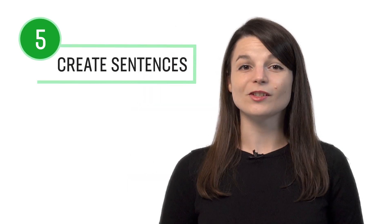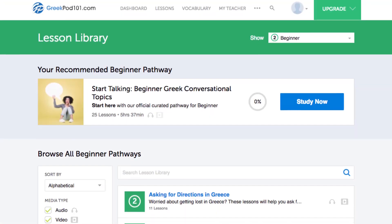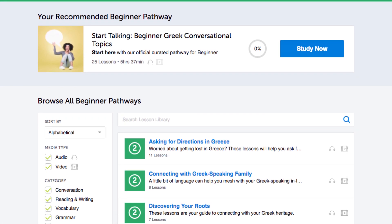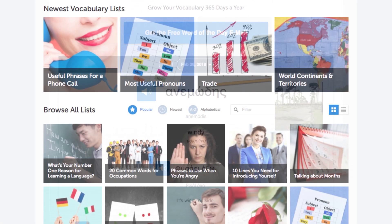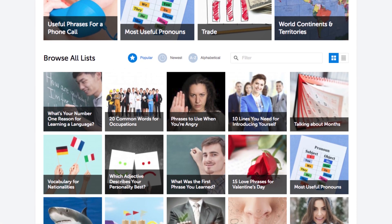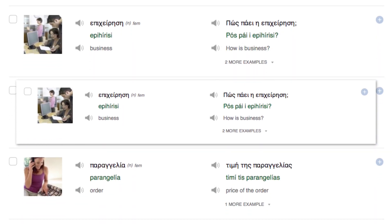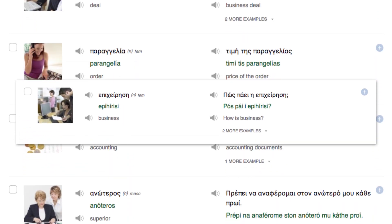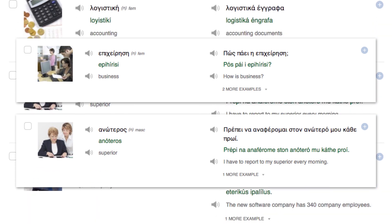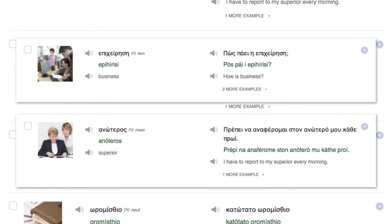Number five, create sentences using newly learned words. You can learn new words with our lessons, the word of the day, the vocab lists, and the core 2000 word list, which gives you the 2000 most frequently used words. And as mentioned before, you can also leave a comment with a practice sentence and our teachers will review it.